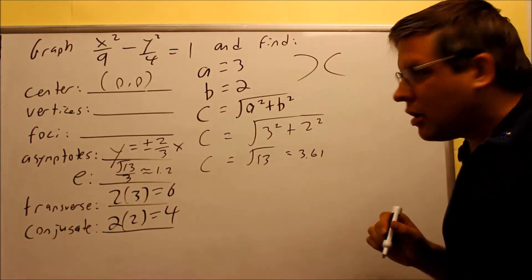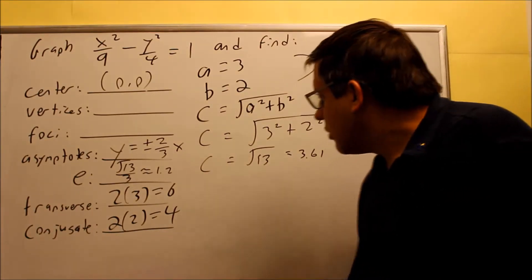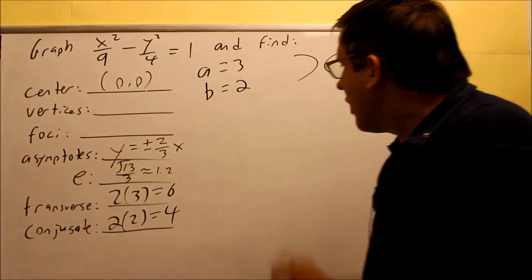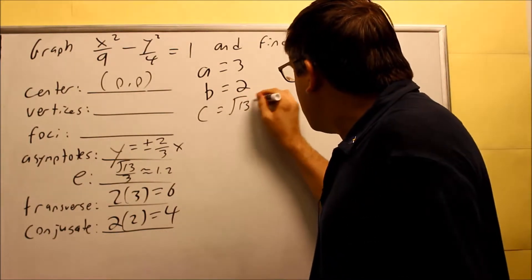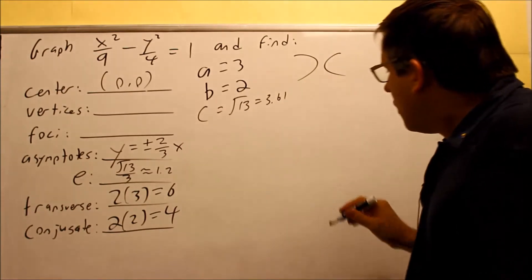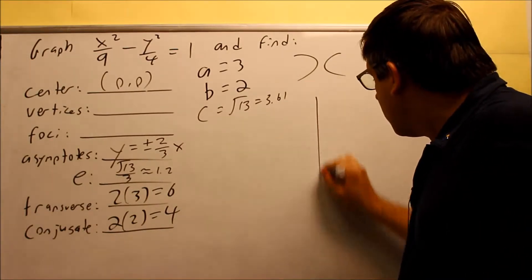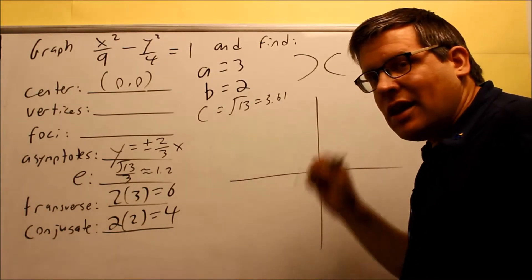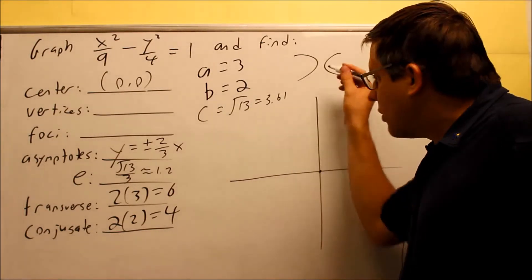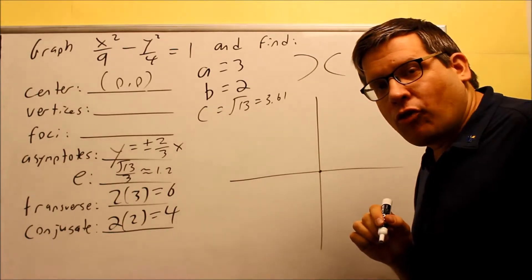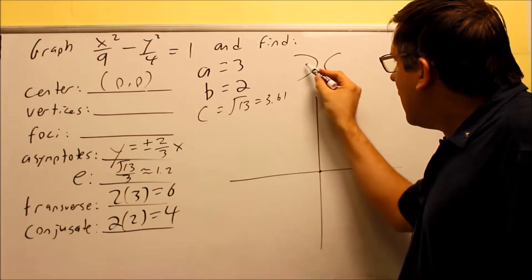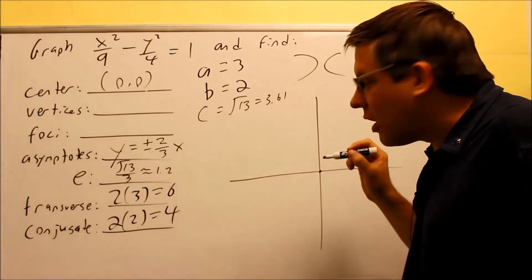Now we're ready to start doing the graph. Our c value originally was square root of 13, 3.61. When you do that, you're going to start with the center. The center is going to be zero zero. The a has to go in the direction that opens up.